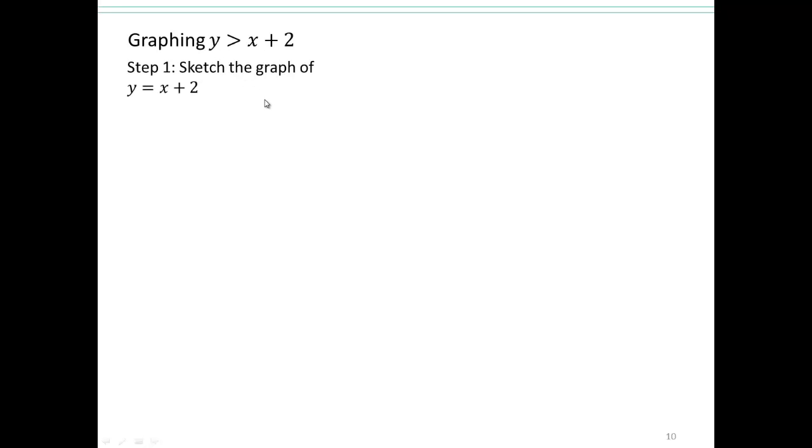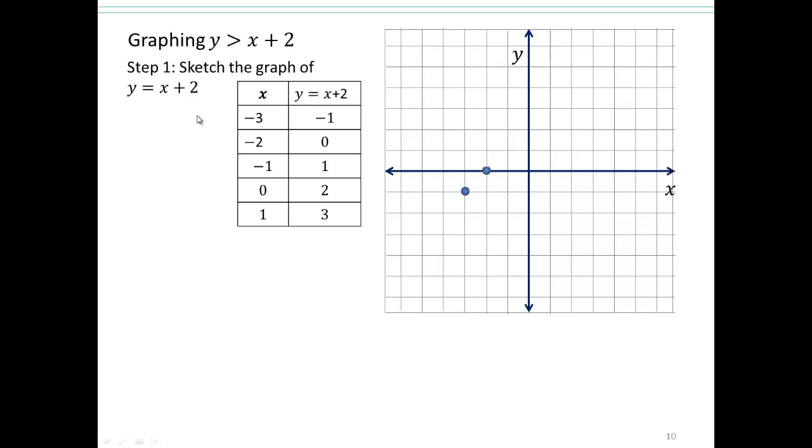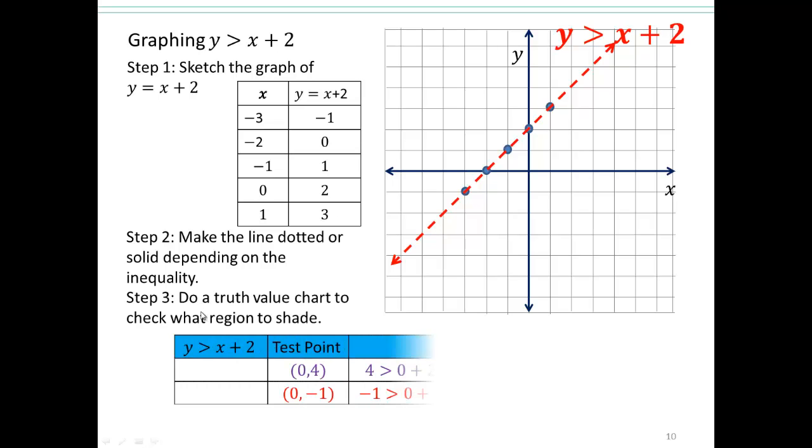Let's take a look at this inequality. We're going to draw the graph like we did before, plot all the points, and sketch the graph of that line. We want y greater than x plus 2. Can you have equal to? No, you cannot. So this solid line needs to change to a dotted line. None of these points are solution points. All the points on the line are not solutions to this inequality.